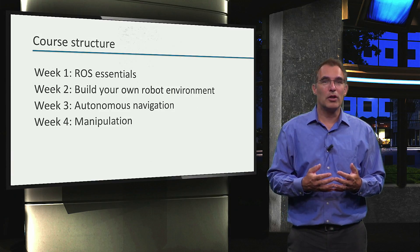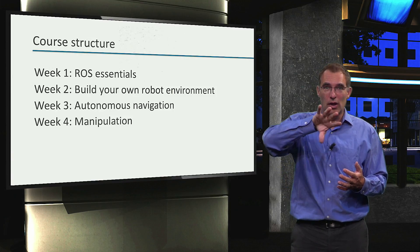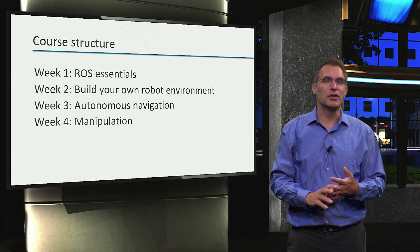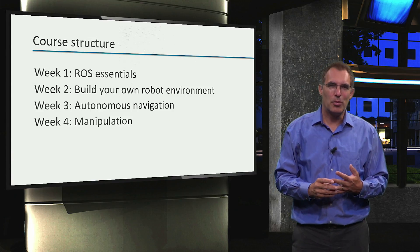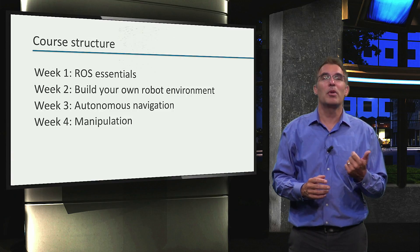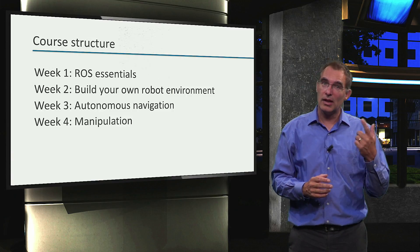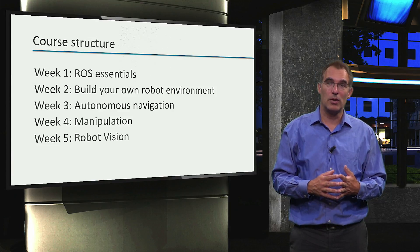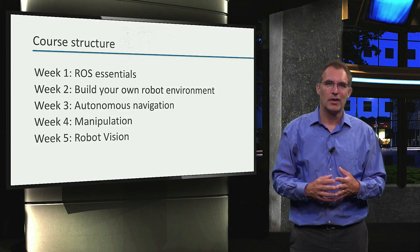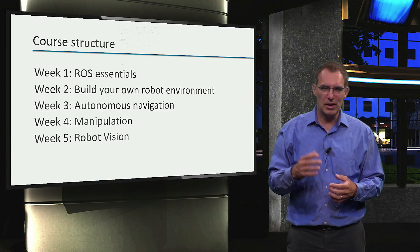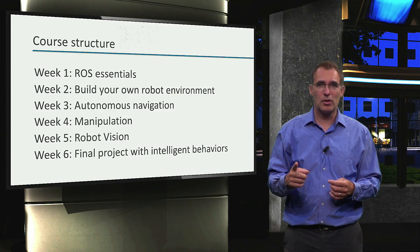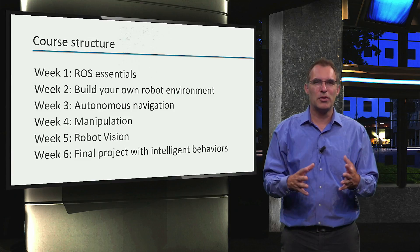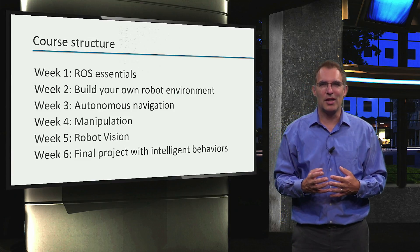Week 4 will bring us to robot manipulation, where you will learn how to let the robot arm plan a motion without collisions. Obviously, both navigation and manipulation require that the robot can see its environment, and this will be addressed in week 5. Finally in week 6 you will make a final project where everything comes together, and you will learn how to use state machines to program intelligent behavior.